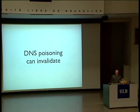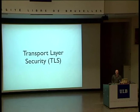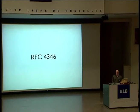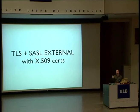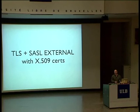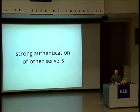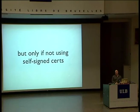Obviously, if you do DNS poisoning, you can invalidate this. So if we need something stronger, we use Transport Layer Security — RFC 4346 — the IETF upgrade to SSL. This enables channel encryption, and if you use TLS with certificates and the SASL EXTERNAL mechanism, you can really tell who someone is. This enables strong authentication of other servers, but only if you're not using self-signed certificates — because if you're using self-signed, anyone can do a self-signed certificate, which is totally meaningless.